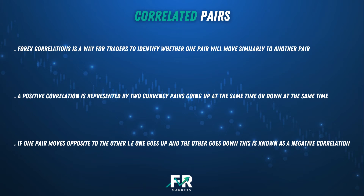Hello everyone and welcome to the next lesson. Today we're talking about Forex correlations. Forex correlations is a way for traders to identify whether one currency pair will move similar to another currency pair. A positive correlation is represented by two currency pairs going up at the same time or down at the same time. However, if one currency pair moves opposite to the other — one goes up and the other goes down — this is known as a negative correlation.